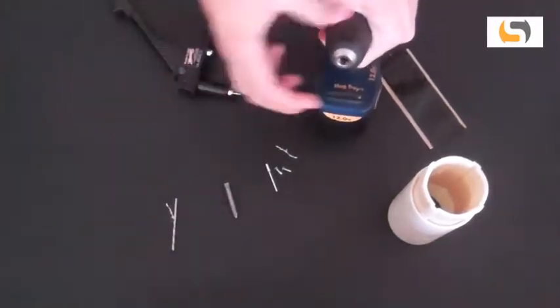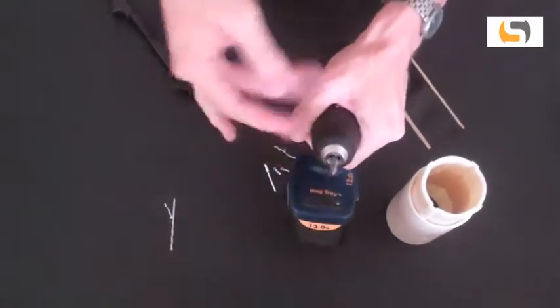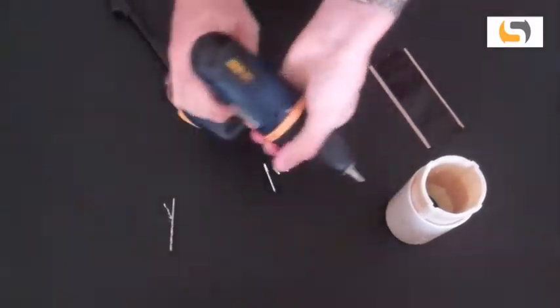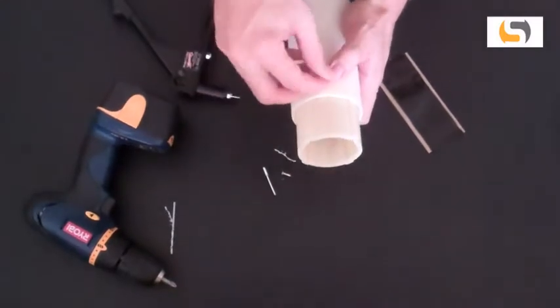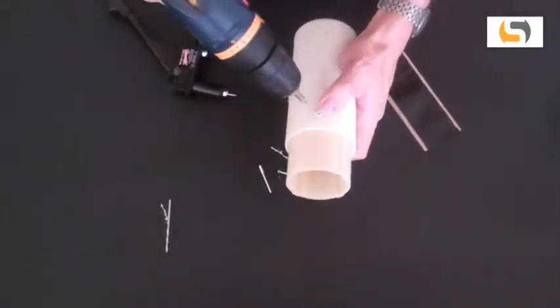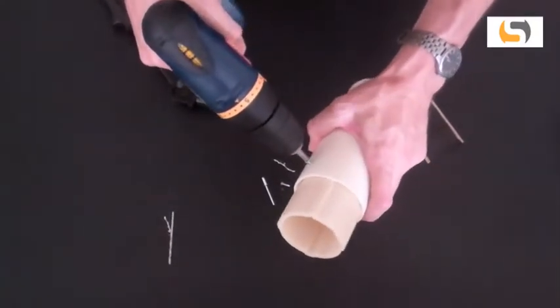The alternative method is to install using self-tapping screws. To demonstrate this, I will change the bit to the phillips head. Insert the screws into the guide holes, then secure the screws into the casing.